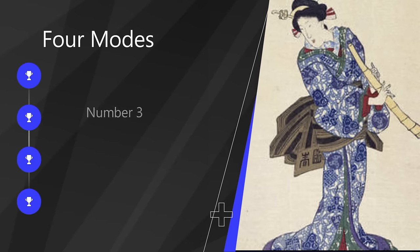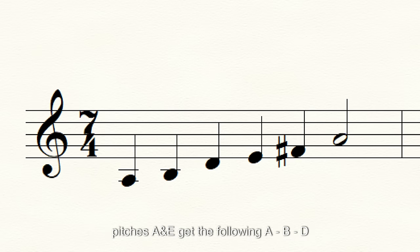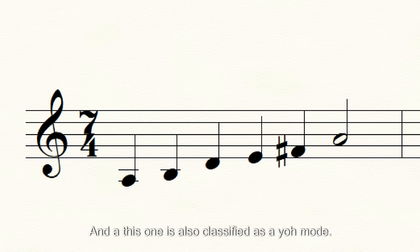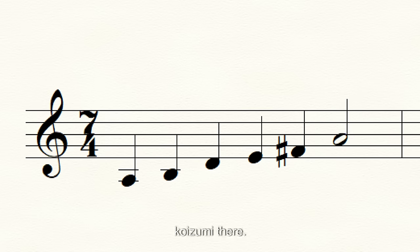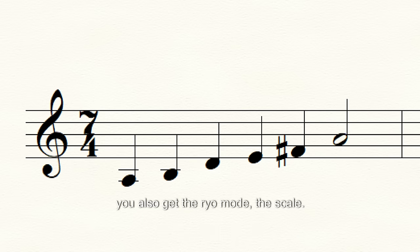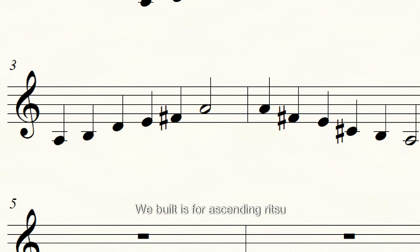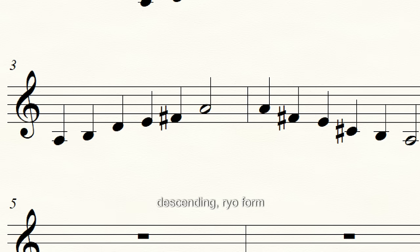Next is our Ritsu scale. Starting from A, and building off our two stopping pitches A and E, we get: A, B, D — jump to E — F-sharp, and A. This one is also classified as a YO mode, however it is used mostly for gagaku music, which comes from China. According to Koizumi, the three-note modes are not used there, and they will have their own music theory for handling pitch and melody. Interestingly, if you lower the third pitch when descending, you also get the Ryo mode.